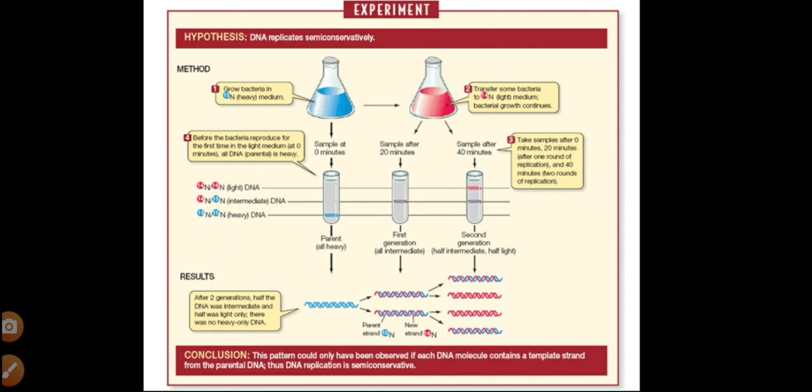After 40 minutes, they took one more sample, centrifuged it, and identified that one portion is completely light DNA — two strands containing N14 and N14. Another portion of the DNA contained N14 and N15 in the same molecule — one strand with N14 and the other strand with N15. So it is semi-conservative.